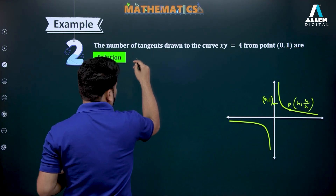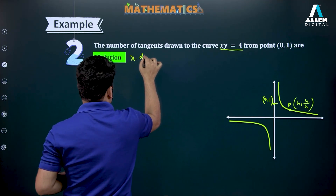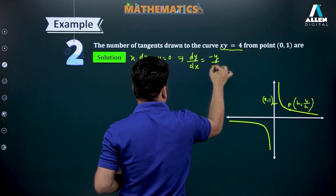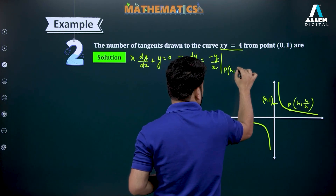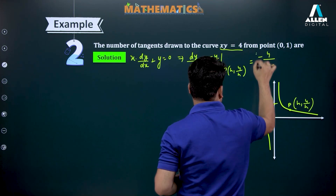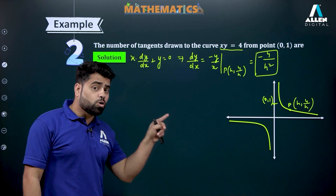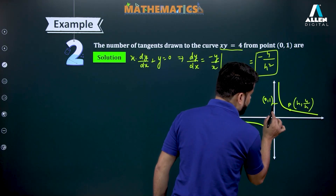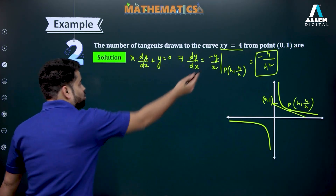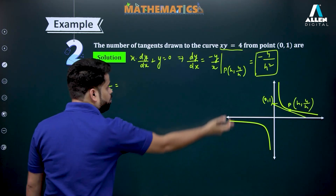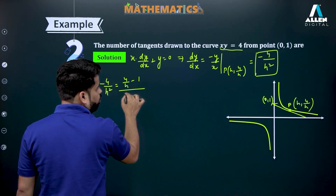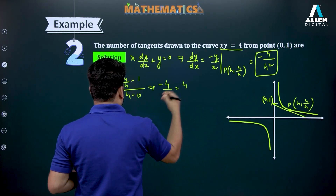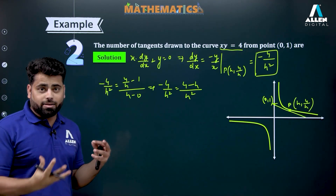I differentiate xy = 4: x(dy/dx) + y = 0, so dy/dx = -y/x. At point P (h, 4/h), this gives slope = -4/h². Writing the same slope using (y₂ - y₁)/(x₂ - x₁) with external point (0, 1): slope = (4/h - 1)/(h - 0) = (4 - h)/h². Setting these equal: -4/h² = (4 - h)/h². Now there's an instinct to cancel h², but that would eliminate a possible root.